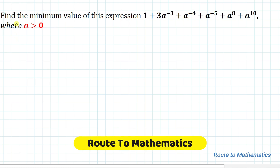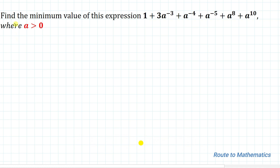Hello everyone, welcome to Root2Mathematics. In this video, we are going to solve an interesting algebraic question. The given question is: find the minimum value of the expression 1 plus 3a^(-3) plus a^(-4) plus a^(-5) plus a^8 plus a^(10), where a is greater than 0.